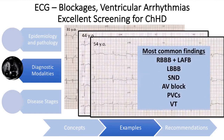The most common ECG findings are right bundle branch block combined with left anterior fascicular block — certainly the most common. Also seen are left bundle branch block, sinus node dysfunction with significant bradycardia, AV blocks — these last two are frequent indications for pacemakers — and arrhythmias of different kinds, including PVCs, PACs, and eventually ventricular tachycardias and atrial fibrillation.